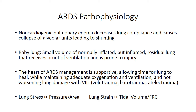Lung stress and lung strain are directly linked to ventilator-induced lung injury. Lung stress is proportional to the pressure that the lung experiences over the cross-sectional area of that lung, and lung strain is proportional to the change in volume over the starting volume — or in the case of the lung, the tidal volume over the functional residual capacity. With the baby lung, the starting cross-sectional area and starting volume are very small, putting the lung at higher risk of stress and strain, and thus a higher risk of ventilator-induced lung injury. This is why it becomes important to limit pressure and limit tidal volume.